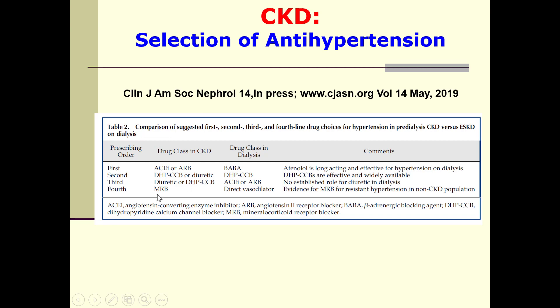Beta blockers are reserved for compelling indications: ischemic heart disease, heart failure, etc. — they are not the drug of choice as first prescription. However, in dialysis patients, beta-adrenergic receptor blockers are the drug of choice because of increased sympathetic overactivity. In CKD: ACE inhibitors or ARBs first, followed by calcium channel blockers or diuretics, and lastly mineralocorticoid receptor blockers. In dialysis: beta blockers first, followed by dihydropyridine calcium channel blockers, then ACE inhibitors or ARBs, and lastly direct vasodilators.